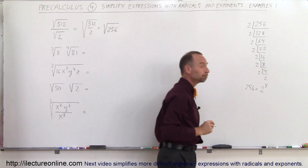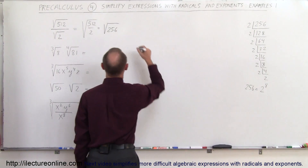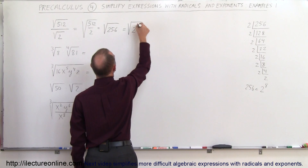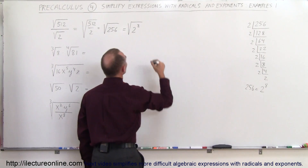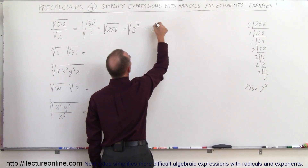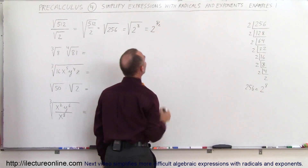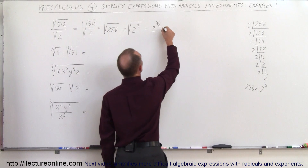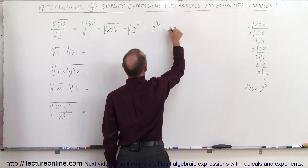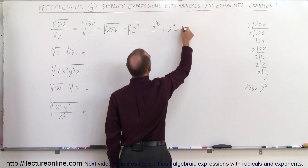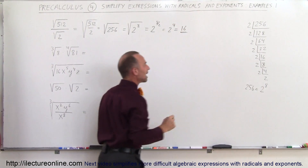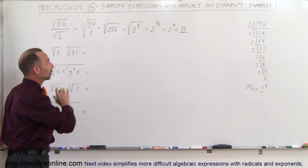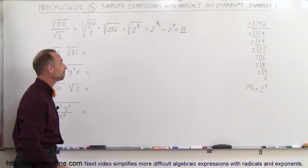2 to the 8th power. This can be written as the square root of 2 to the 8th power. Then you can say this is equal to 2 to the 8 divided by 2 power, because now we write it as a fractional exponent. Which means this is equal to 2 to the 4th power, and that is indeed 16. So that's a nice way to verify that the square root of 256 is indeed 16.